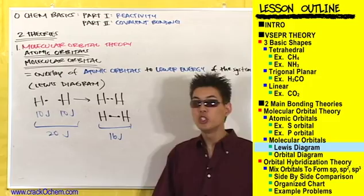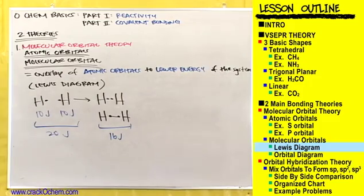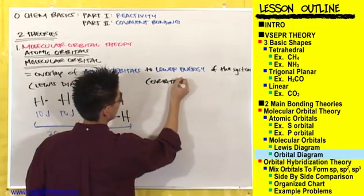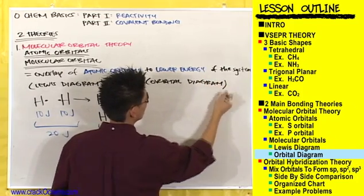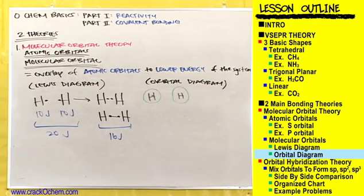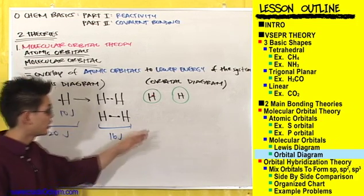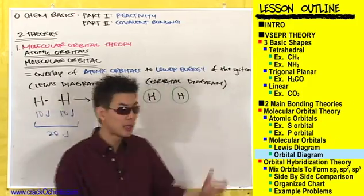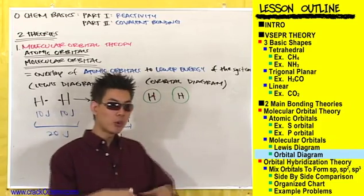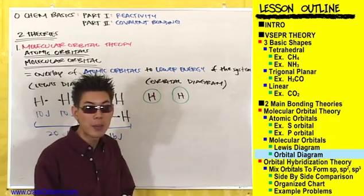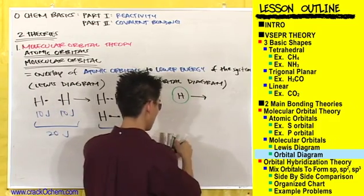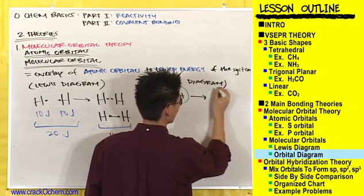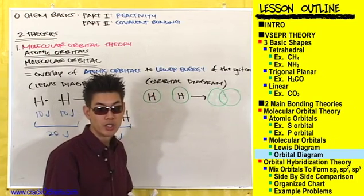Let me show you the same concept of bonding using an orbital diagram. These two orbitals are going to come together and form a bond, just like we saw these two atoms of hydrogen come together and form a bond, except this time we're drawing the actual shapes of the orbitals. They're going to form a bond by overlapping their atomic orbitals, like this. Here's one orbital overlapping with another.